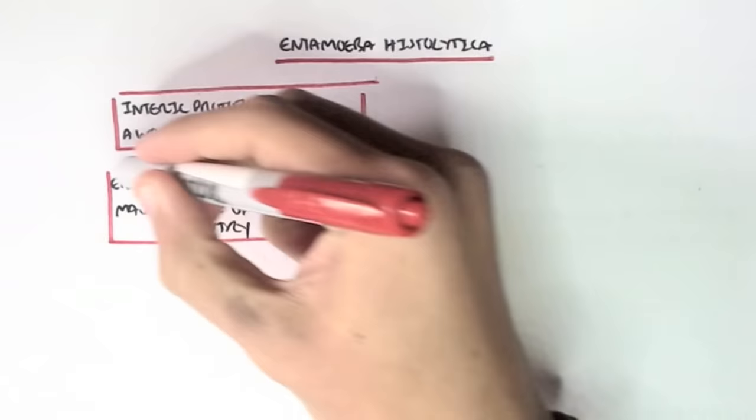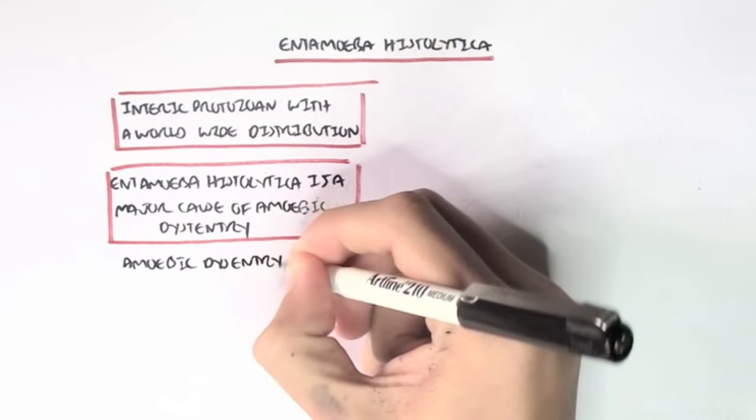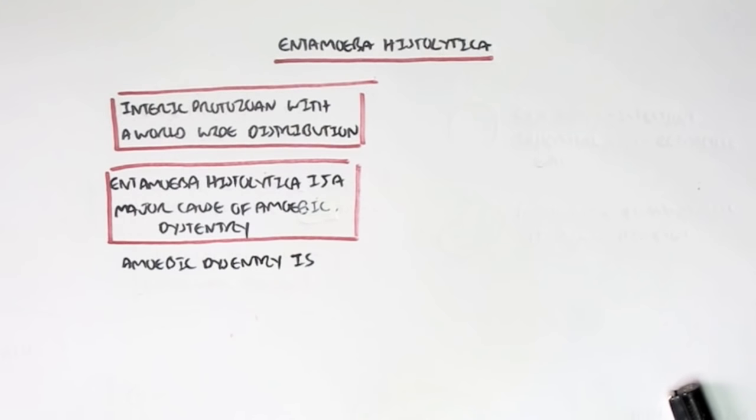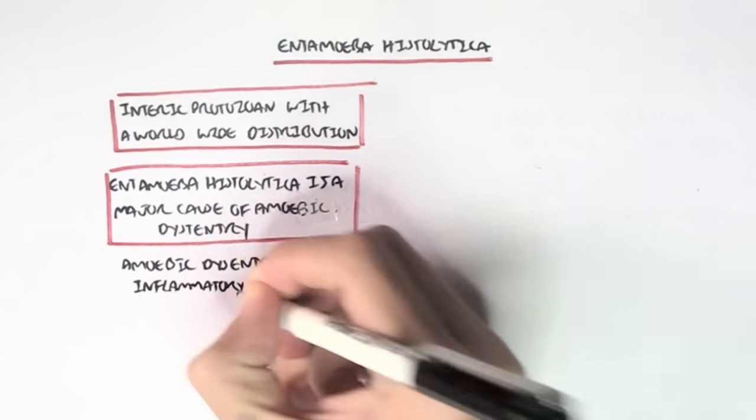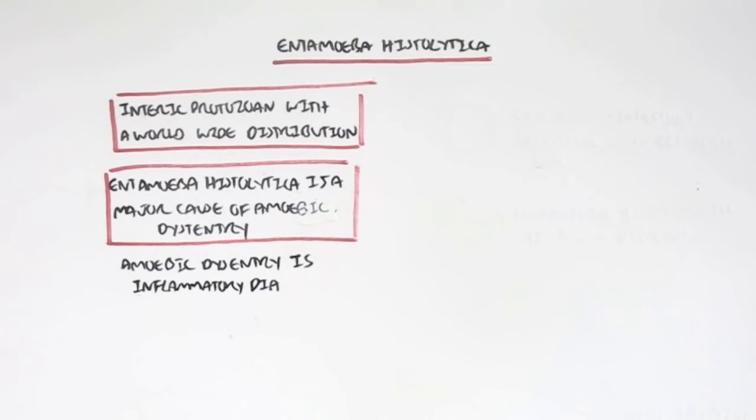Entamoeba histolytica is a major cause of amoebic dysentery. What is amoebic dysentery? Well, it's essentially inflammation, inflammatory diarrhea, together with many other things such as ulcers and really painful gut area.